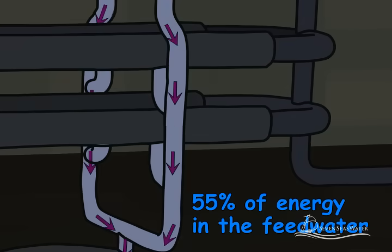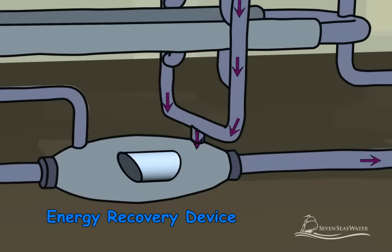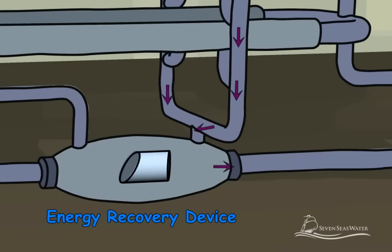The concentrated salt stream retains about 55% of the total energy of the seawater stream that was originally fed to the membranes. To reduce the energy that is required to operate the reverse osmosis plant, the pressurized concentrated stream is piped into an energy recovery device.